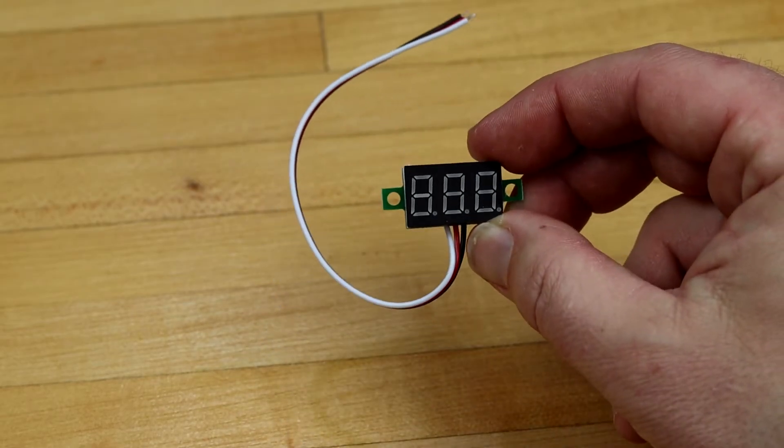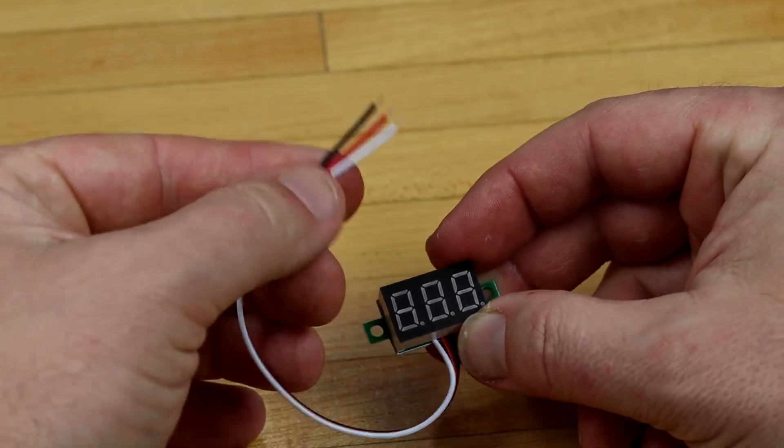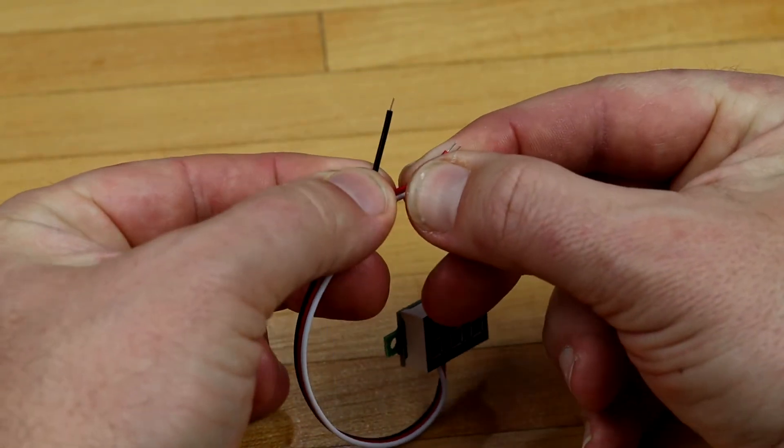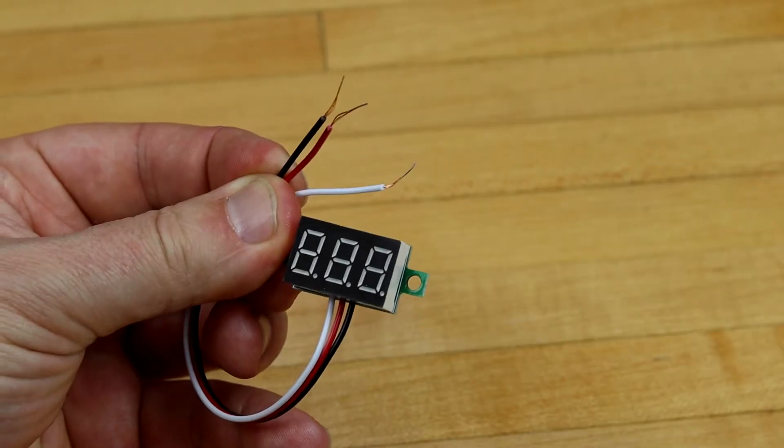Next, grab the LED voltmeter. We'll strip all three wires. Pull the wires apart and strip them. The red and white are positive and the black is negative.